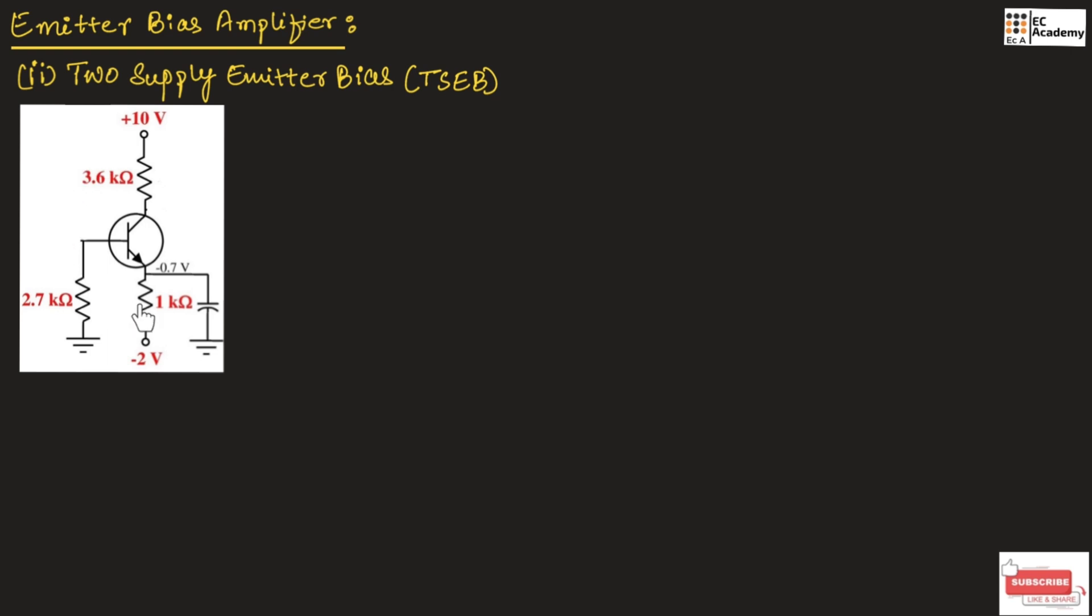This diagram shows two-supply emitter bias configuration. Here, along with VCC, the emitter terminal will also be biased with negative voltage as shown in this figure. That's why it is known as two-supply emitter bias.